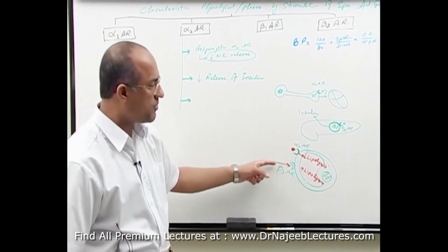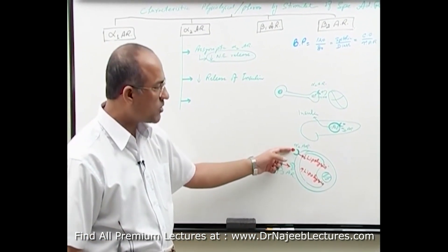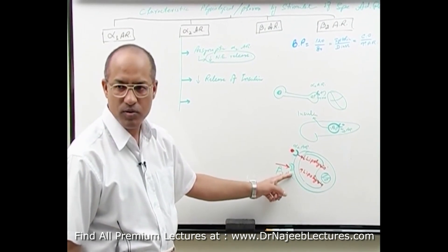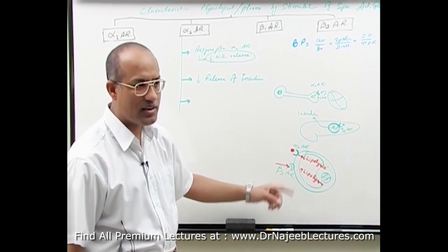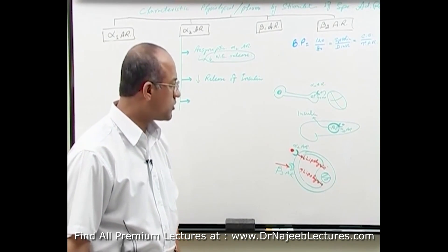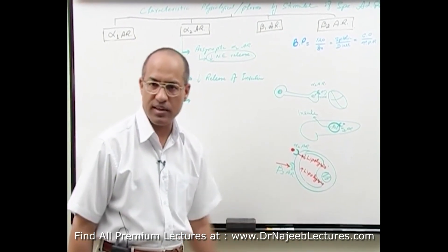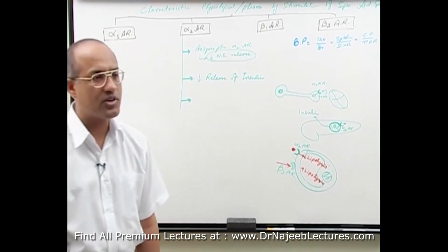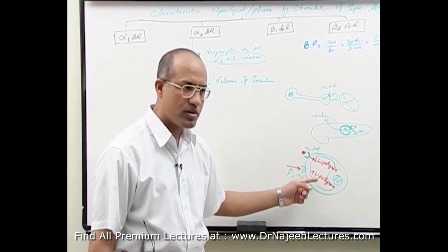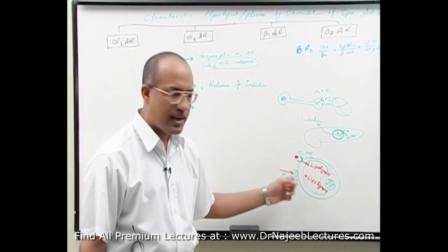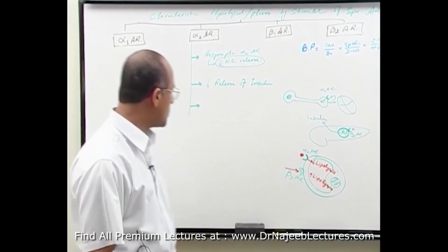If you cannot remember both types of receptors, forget about alpha 2 but please remember beta 3 adrenergic receptors which are more important. But if you are really good, you must remember that on the adipocytes there are adrenergic stimulatory receptors — beta 3 — and adrenergic inhibitory receptors — alpha 2.